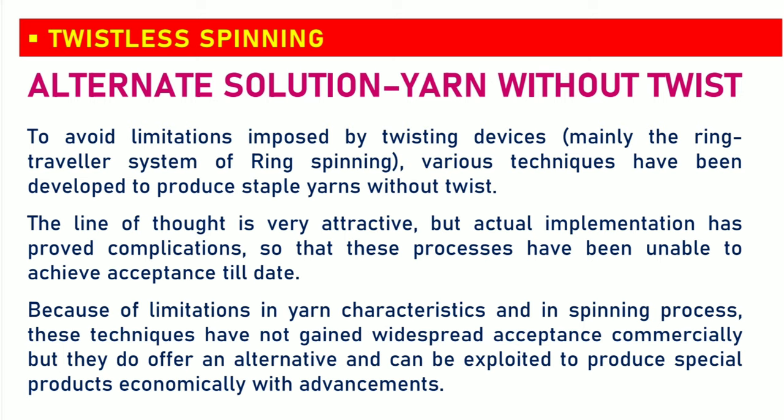Now, the alternate solution — yarn without twist. To avoid limitations imposed by twisting devices, various techniques have been developed to produce staple yarns without twist. The line of thought is very attractive, but actual implementation has proved complicated, so these processes have been unable to achieve acceptance till date because of limitations in yarn characteristics and in the spinning process. These techniques have not gained widespread commercial acceptance, but they do offer an alternative and can be exploited to produce special products economically with advancements.